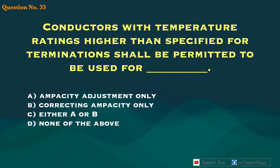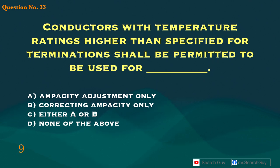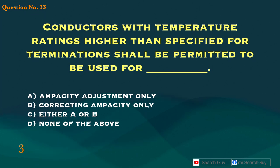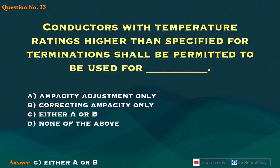Question 33. A higher temperature rating should be permitted to be used for blank. A. Ampacity adjustment only. B. Correcting ampacity only. C. Either A or B. D. None of the above. Answer: C. Either A or B.